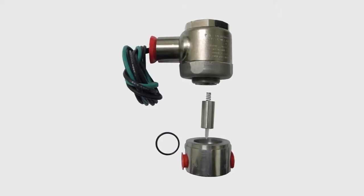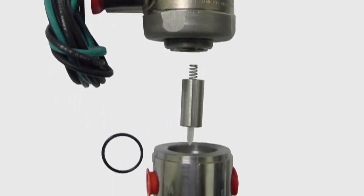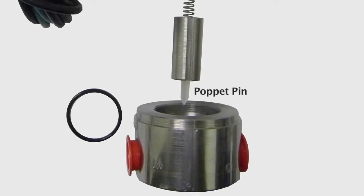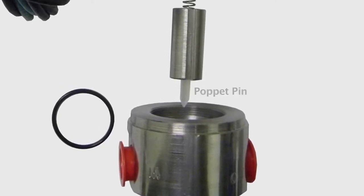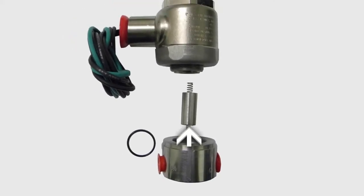Here's an exploded view of the solenoid valve. It's a simple design with no dynamic seals. It has a poppet pin of Lexan-type material. The pin remains seated until the coil is energized. It's pulled up immediately to deliver the pilot pressure to the control.